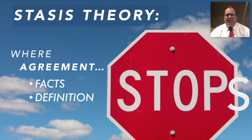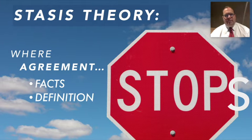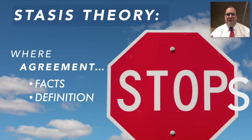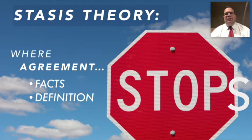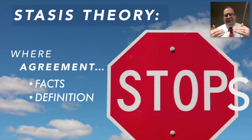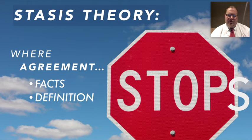The next stage is definition. We look at key elements of the situation and examine their definition. One key element here would be sexual harassment — does this boy kissing this girl rise to the definition of sexual harassment? There's a legal definition of sexual harassment, and part of that involves what the girl's response was, whether this was a repeated occurrence, and the history. If agreement stops here and we disagree about whether this is sexual harassment, then this is the level at which we argue, because the argument would be very different depending on whether it was or wasn't.